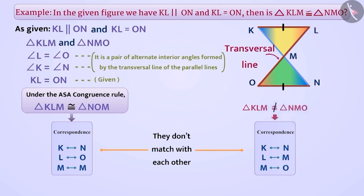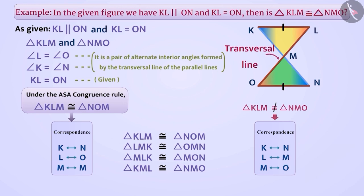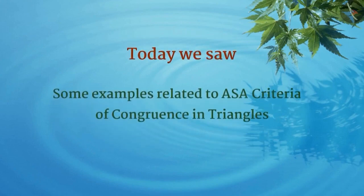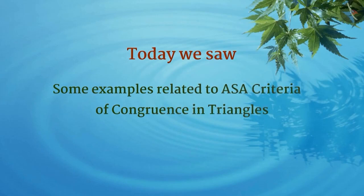Can you tell us how we can write the correct relation of congruence? Think for a while. Absolutely right — we can write it in any of the following ways. Today, we saw some examples related to ASA criteria of congruence in triangles. In the next video, we will see some misconceptions related to them. Thank you.